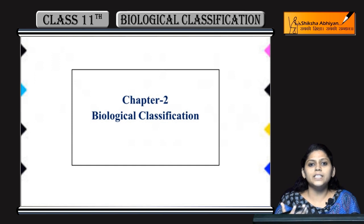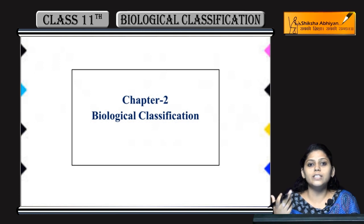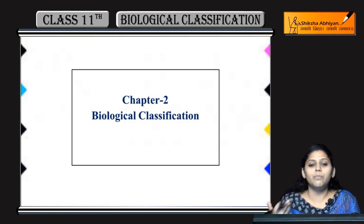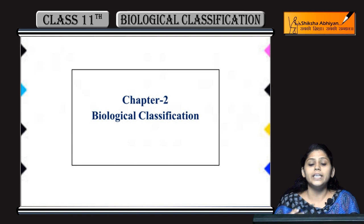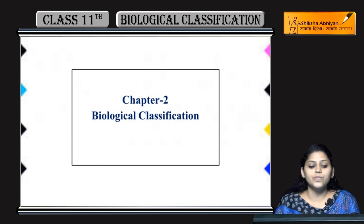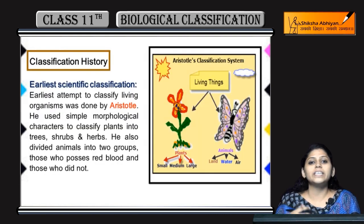For example, if you have to describe a man, you can say what characteristics he has — he is studious, laborious, naughty. In biological classification, first you have characteristics, then you have naming. So let's talk about the history of classification — how classification evolved.